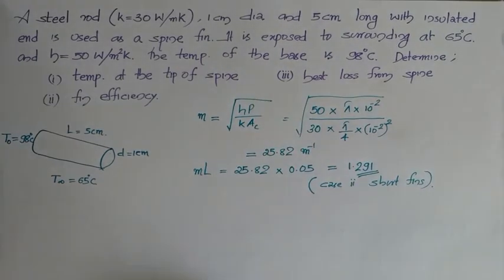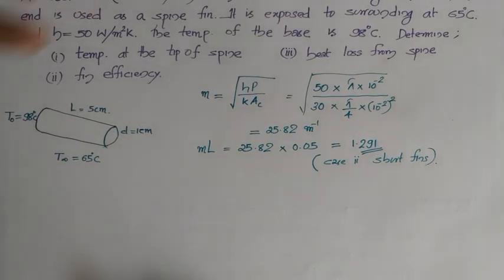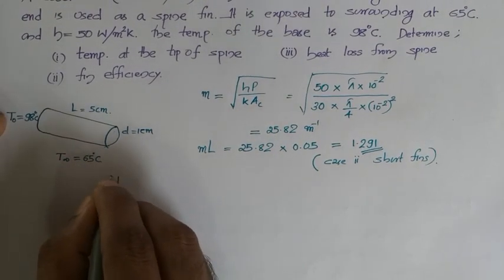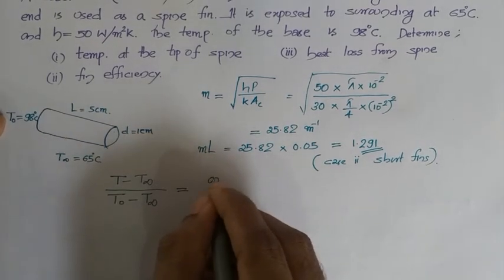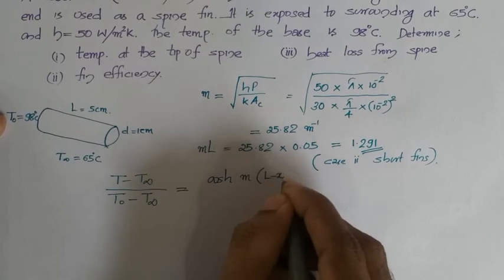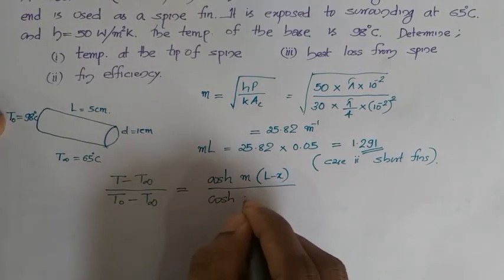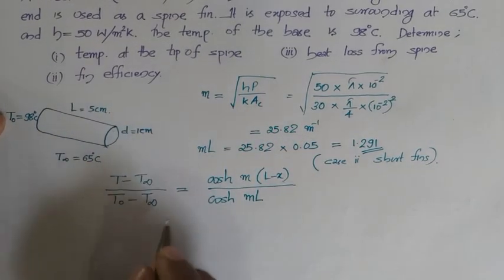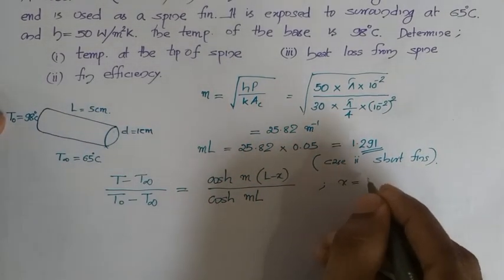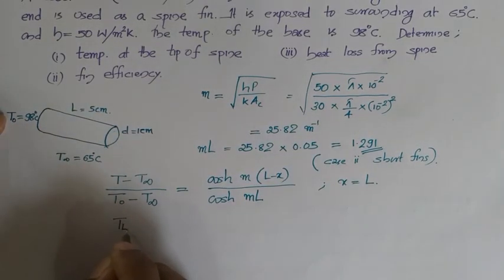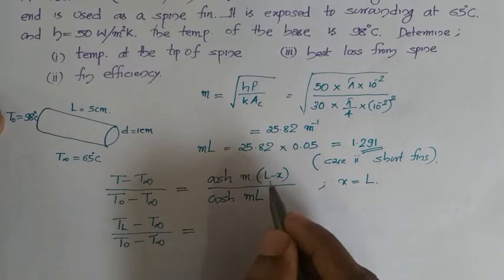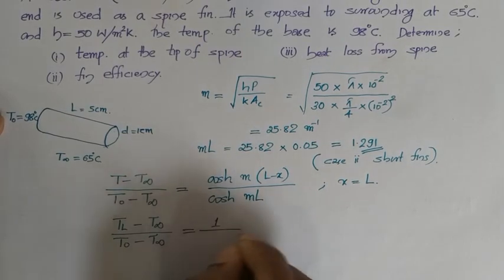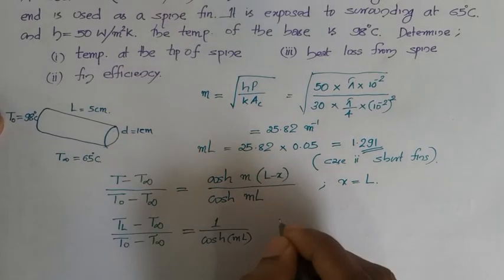For the first part, we evaluate the temperature at the tip of the spine. The temperature distribution for Case 2 fins is: (T minus T∞) divided by (T₀ minus T∞) equals cosh(M(L minus x)) divided by cosh(ML). To find the temperature at the tip, we substitute x equal to L, so (L minus x) becomes zero. cosh(0) equals 1, giving (T_L minus T∞) divided by (T₀ minus T∞) equals 1 divided by cosh(ML).